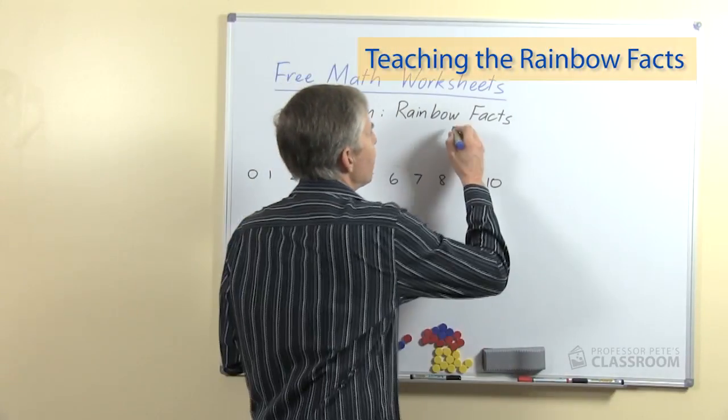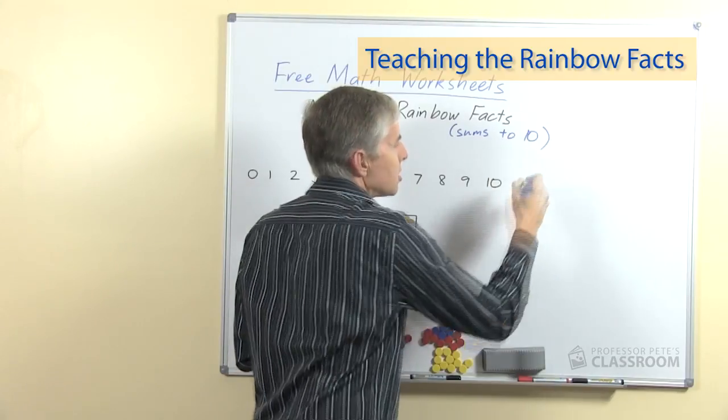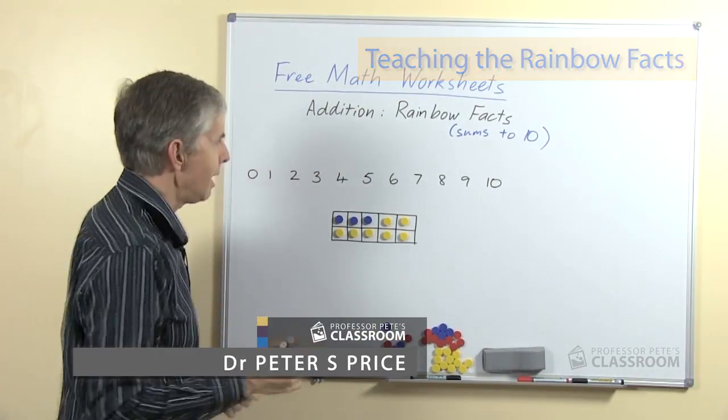Now rainbow facts is another way of referring to them and that's simply sums to 10. So it's pairs of numbers which when you add them together you get 10.